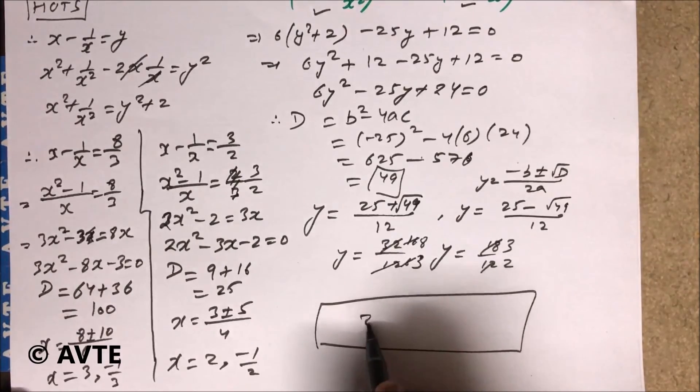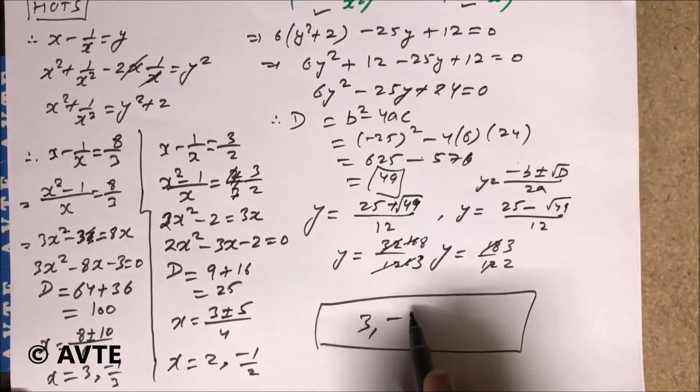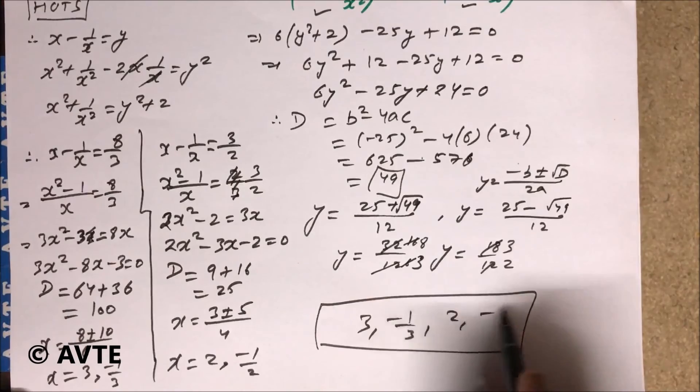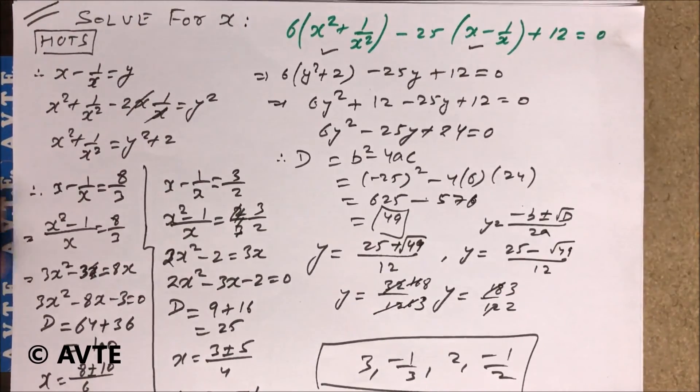So your final answer of x is 3, minus 1 by 3, 2, and minus 1 by 2. These are the possible values of x. So if you like this video just thumbs up and keep watching our channel AVT.